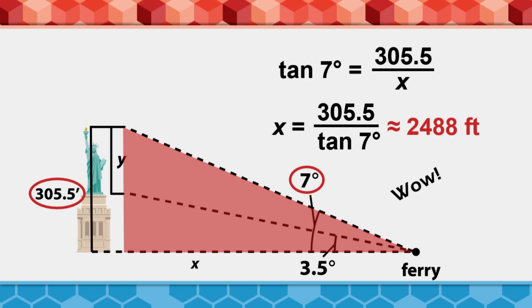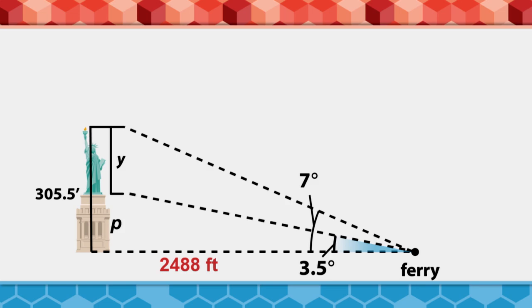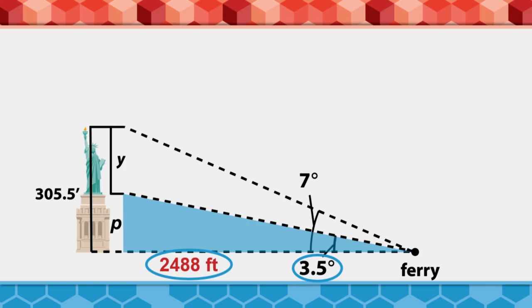Now that we know the length of x, we can find the height of the pedestal. This triangle has a 3.5 degree angle, and an adjacent leg of 2488 feet. To find the pedestal height, we use the tangent function again. The tangent of 3.5 degrees equals p divided by 2488. When we solve, we find out that the pedestal, p, is about 152.2 feet high.